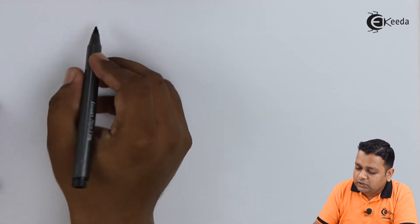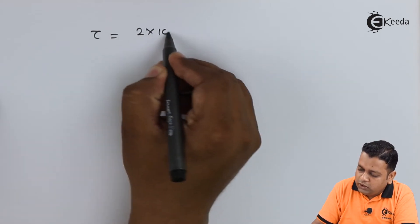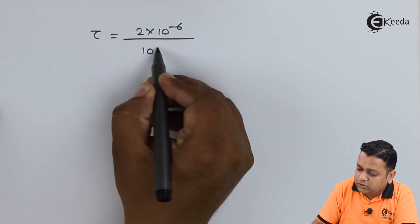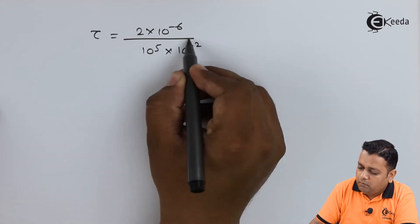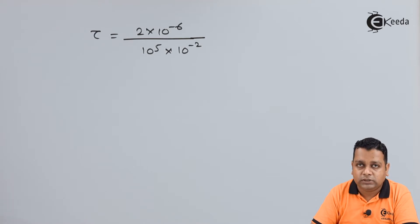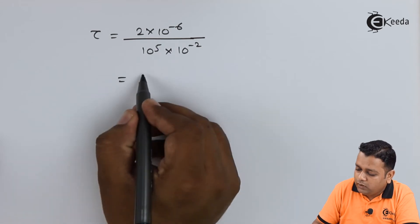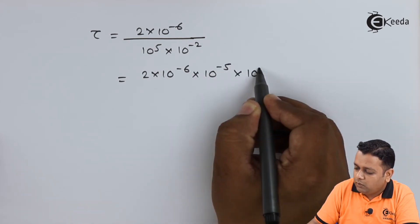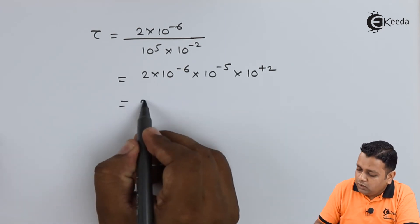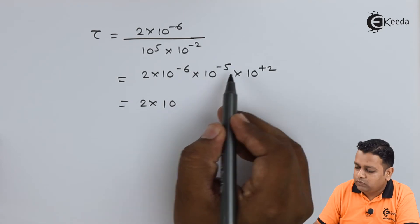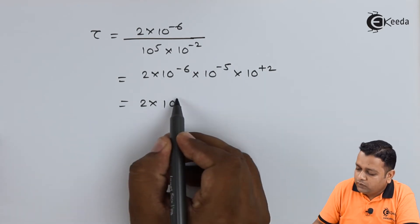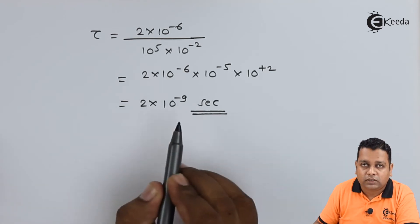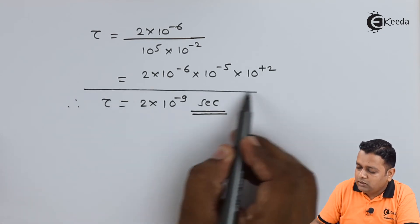By the next step, we express tau is equal to 2 into 10 raised to the power minus 6, replaced in terms of the device length L. In the denominator, we express 10 raised to the power 5 into 10 raised to the power minus 2 to get it converted into meters per second. Therefore, we get it simplified to the form 2 into 10 raised to the power minus 6 into 10 raised to the power minus 5 into 10 raised to the power plus 2. This gets to the answer 2 into 10 raised to the power minus 9 seconds. This completes the computation for part A.